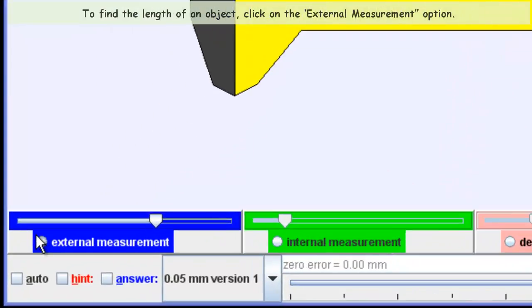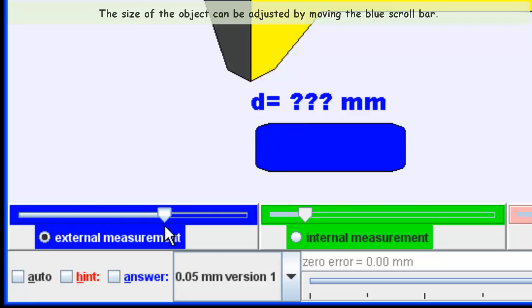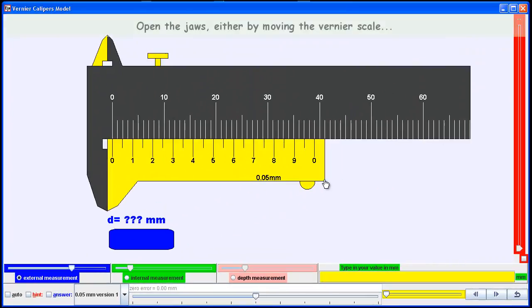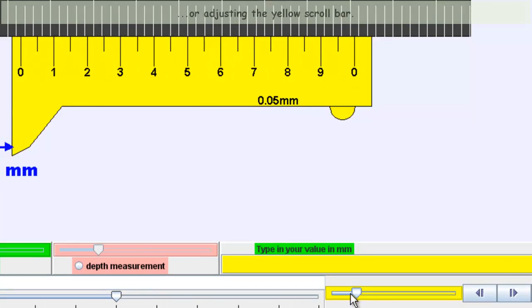You can select an external object by using the blue slider to adjust its size. You can open the jaws either by dragging on the vernier scale or on the yellow slider bar.